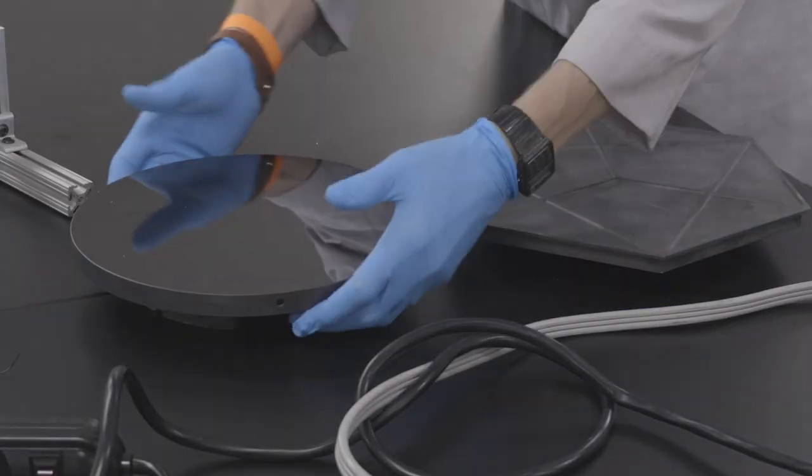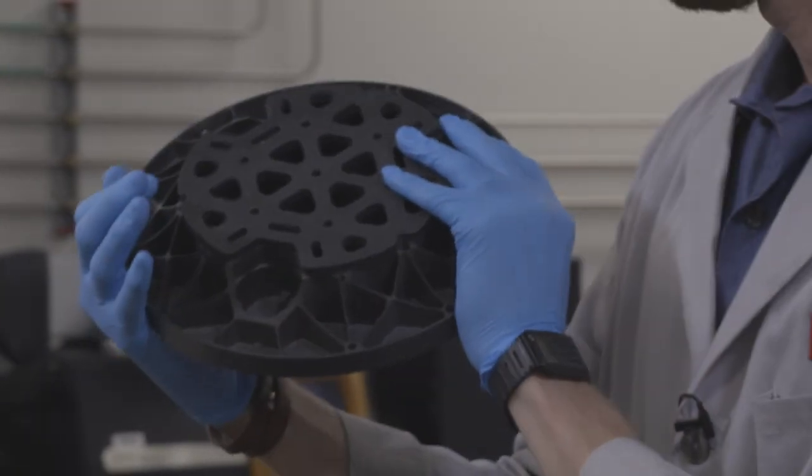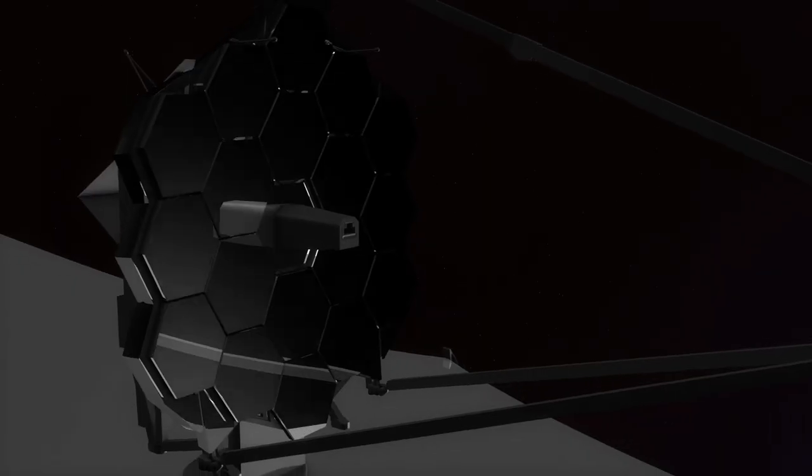Not only are ceramics useful in extreme heat, they're also useful in extreme cold. This is a space mirror. It's used in telescopes that are sent up into orbit and used to study our galaxy and universe.